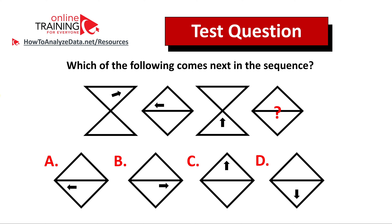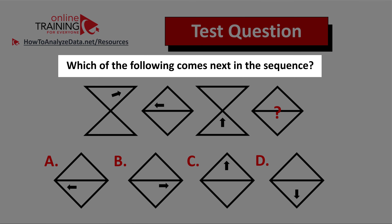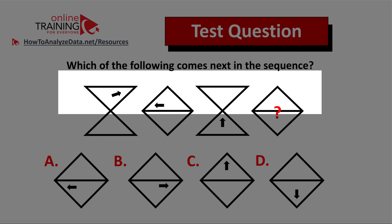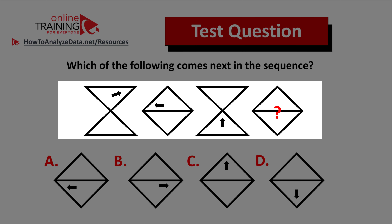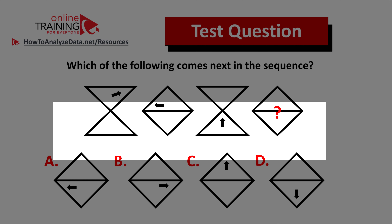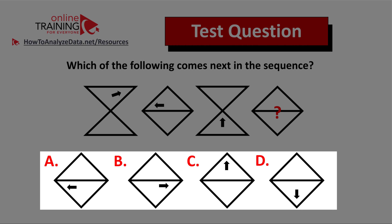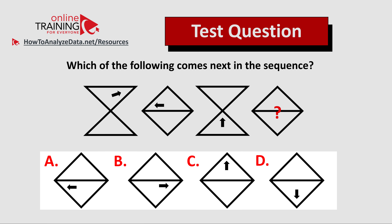Here's a question for you to try to solve on your own. Which of the following comes next in the sequence? You're presented with four different shapes, and shape number four is missing. You have four different choices to determine the next shape. One tip: always look for patterns.